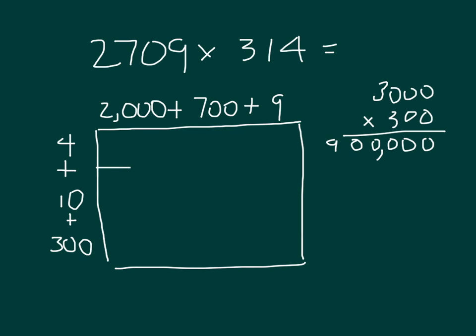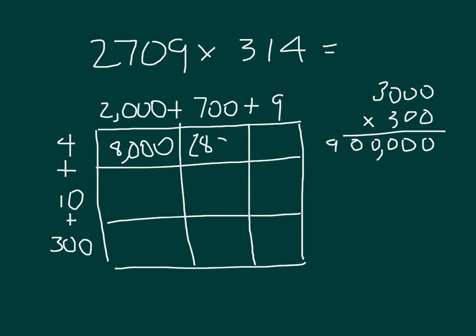Multiplying those together, 2,000 times 4 is 8,000. 4 times 700, that's 28 hundreds, which is written as 2,800. 4 times 9 is 36. 10 times 2,000, that's 20,000. 10 times 700 is 7,000, and 9 tens, of course, is 90.